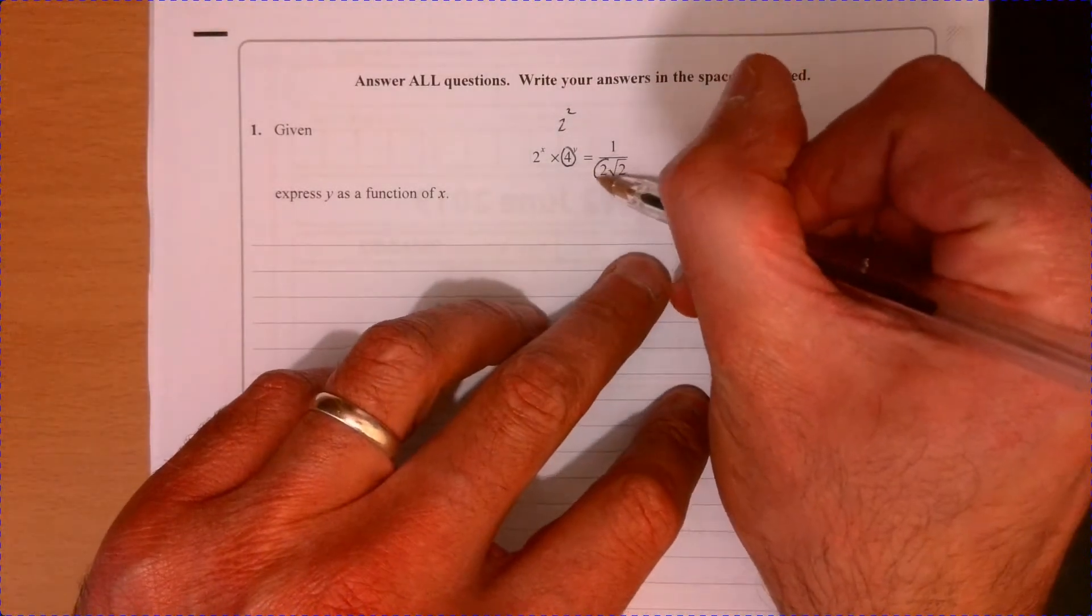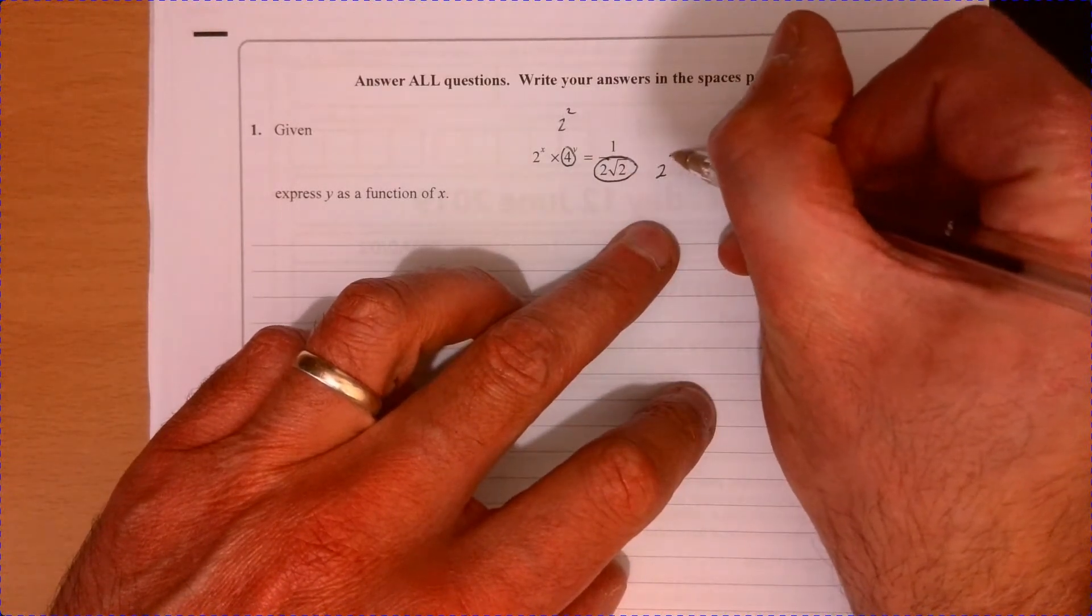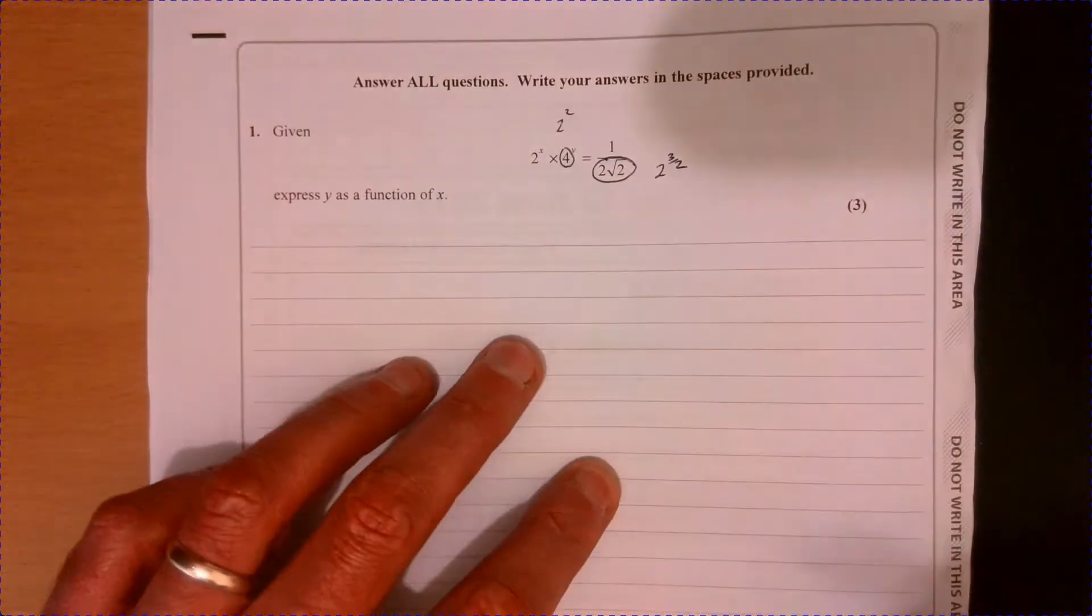And also, two times root two, we should know, that's two to the three over two. So let's rewrite the whole thing.